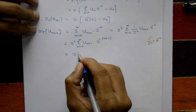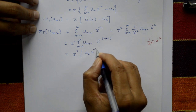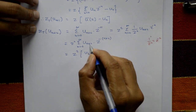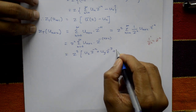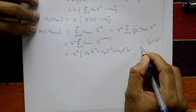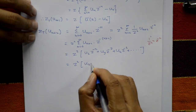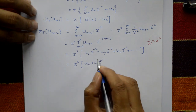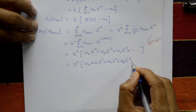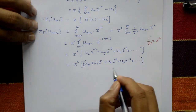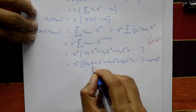Putting n=0, 1, 2, 3, ...: when n=0 we get u(2) Z raised to minus 2; when n=1 we get u(3) Z raised to minus 3; when n=2 we get u(4) Z raised to minus 4, and so on. In this series, u(0) and u(1) Z raised to minus 1 are not present, so we add them — and also subtract u(0) and u(1) Z raised to minus 1 — adding and subtracting.